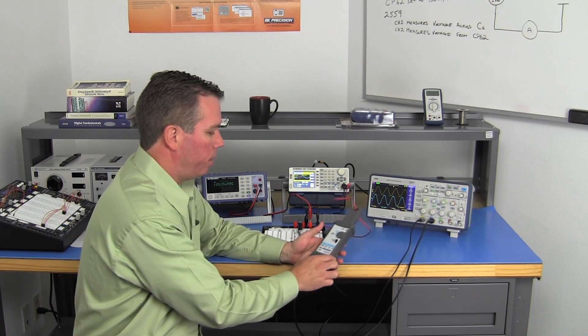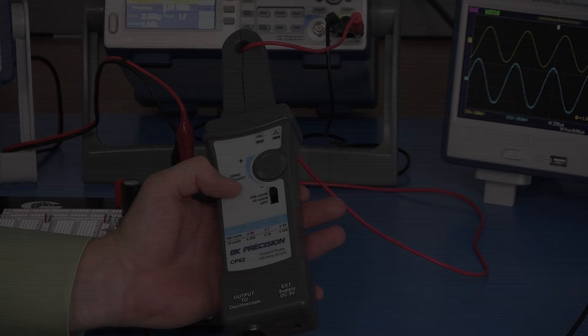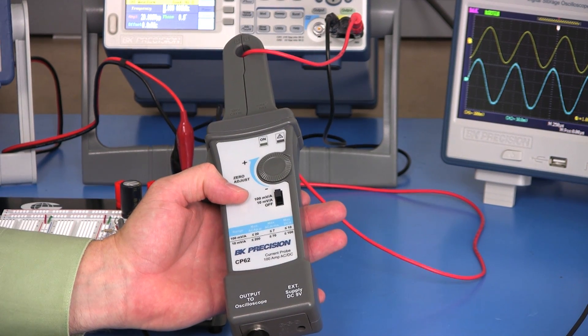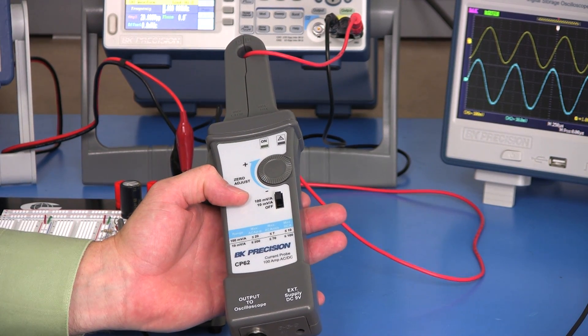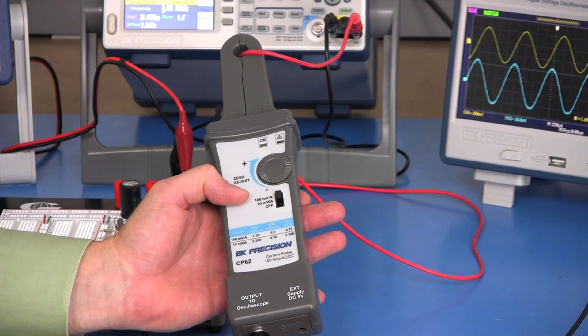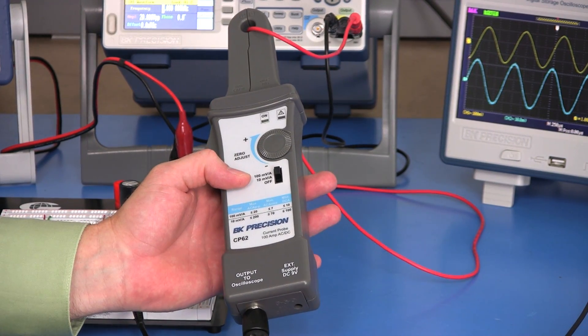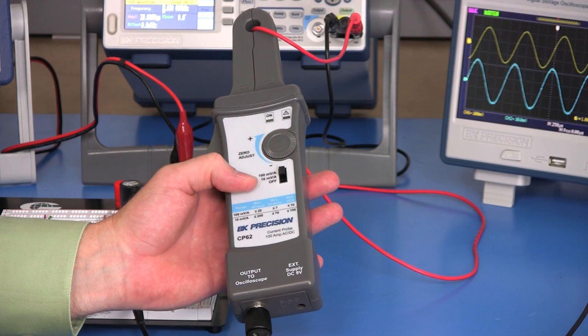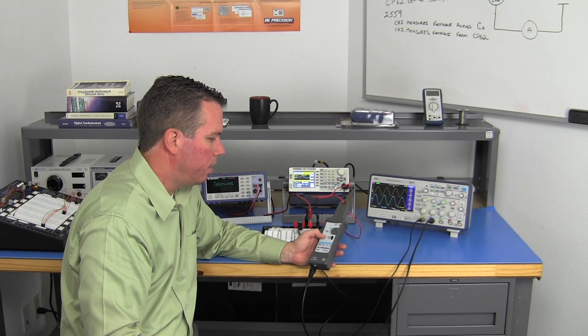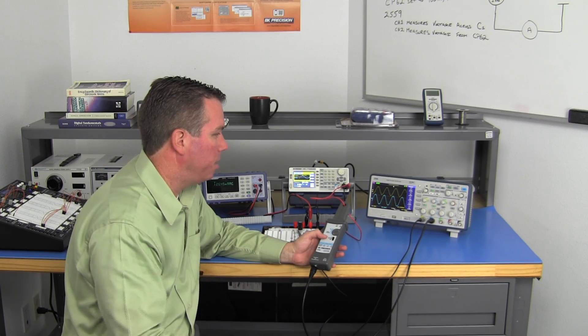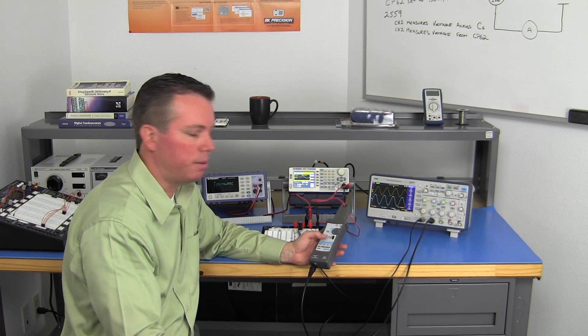The way the CP62 works is you've got 100 millivolt per amp or a 10 millivolt per amp setting. The 10 millivolt per amp is for measuring larger currents. And the 100 millivolt per amp is for measuring smaller currents like we've got here. So if I've got 12 millivolts being measured and it's set to 100 millivolts per amp, that's telling me I'm measuring 120 milliamps.